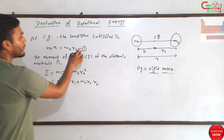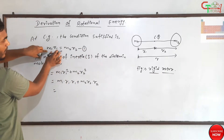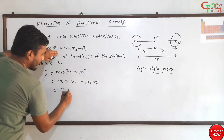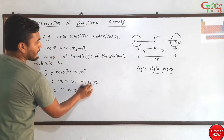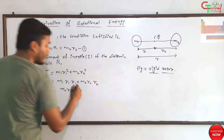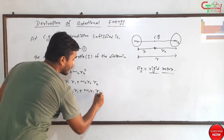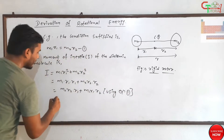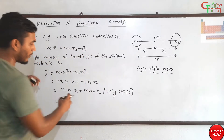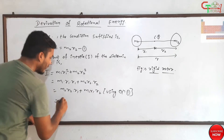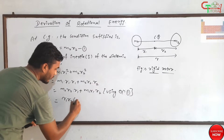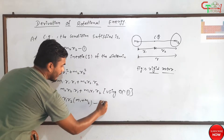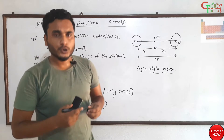Now we can rewrite I as: m1·r1·r1 + m2·r2·r2. Using equation number one, in place of m1·r1 we write m2·r2, and in place of m2·r2 we write m1·r1. Taking r1·r2 as a common factor, we get: I = r1·r2·(m1 + m2). Let's call this equation number two.